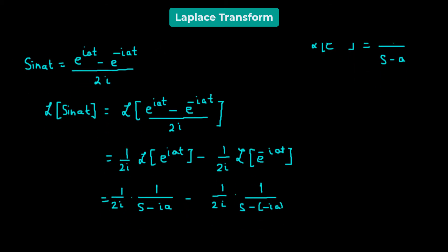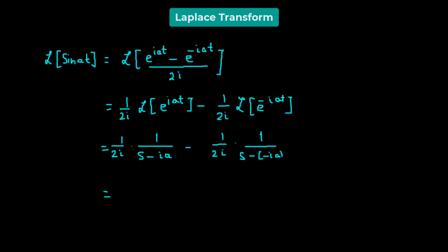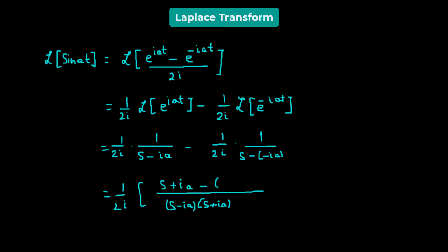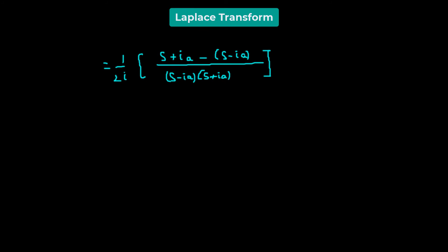Now we are going to combine these. With 1 over 2i as the common factor, the denominator becomes s minus i·a multiplied by s plus i·a, and in the numerator we have s plus i·a minus s minus i·a. So we get 1 over 2i times the quantity s plus i·a minus s plus i·a, divided by s squared minus i·a squared.